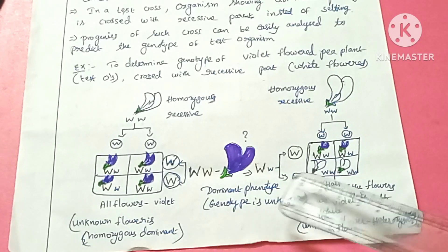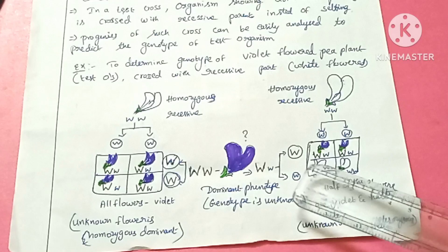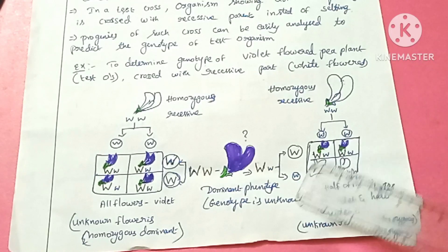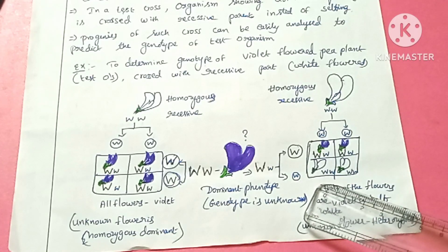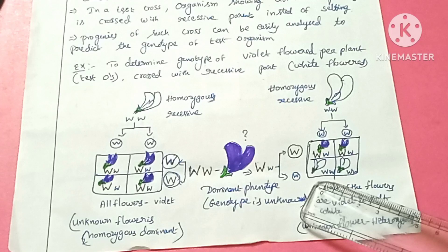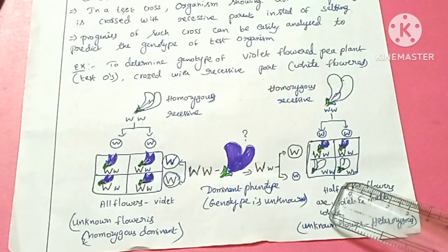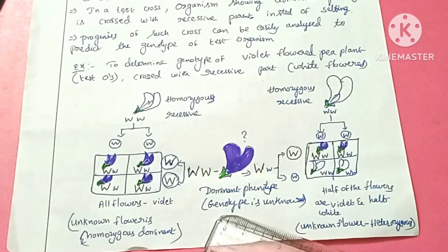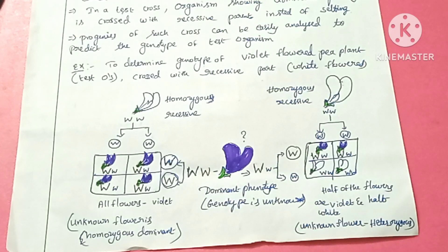In the Punnett square, capital W fused with small w gives a heterozygous violet flower plant. Small w fused with small w gives homozygous recessive white colored flower plants. So using the test cross, you can find out whether the unknown plant is homozygous dominant or heterozygous dominant. This method is called a test cross.